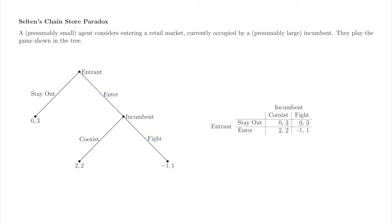Now that we've filled out our matrix, underline best responses to see that there are two pure strategy Nash equilibria: Enter coexist and stay out fight.